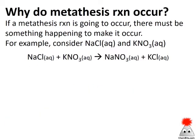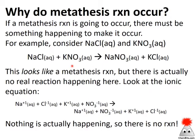The important thing to recognize is why do these metathesis reactions occur? There has to be a reason for there to be a reaction. So if we look at an example of sodium chloride and potassium nitrate, we can write this out as if it's a metathesis — swap those partners and make sodium nitrate and potassium chloride.